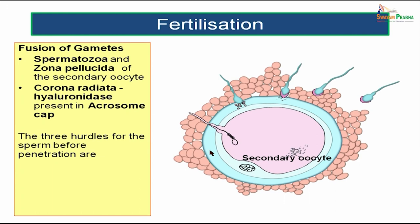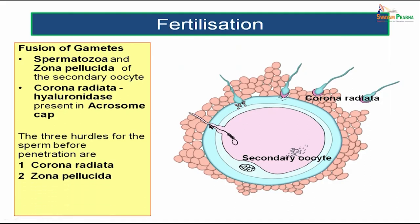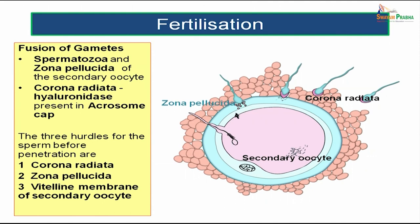What are the three hurdles for the sperm just before penetration of the oocyte? The first is the corona radiata, the outermost layer. The second is the zona pellucida. The third hurdle is the vitelline membrane of the secondary oocyte. The sperm has to cross these three main hurdles: corona radiata is lysed by hyaluronidase from the acrosomal cap; then the zona pellucida is pierced; and finally the sperm reaches the vitelline membrane of the secondary oocyte.